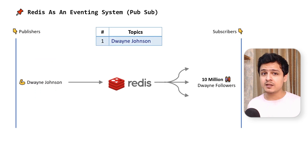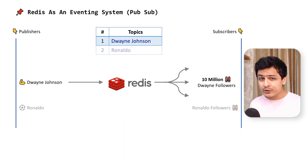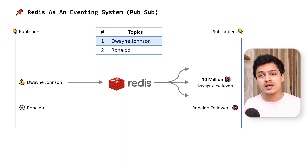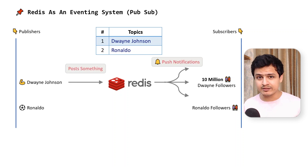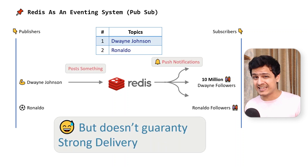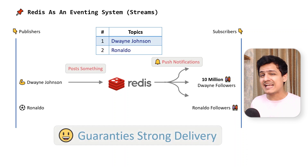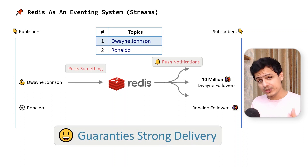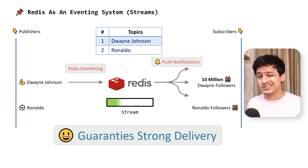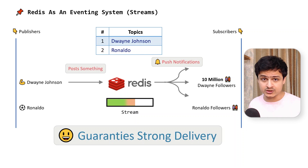Redis supports lightweight PubSub-style messaging with at-most-once delivery. Creating new topics in Redis PubSub is extremely easy and can be done on the fly, making it a perfect candidate for RPC and fire-and-forget use cases. Redis also has Redis Streams for Kafka-like semantics, providing at-least-once delivery, which you can use when you want stronger guarantees. And since all of this resides completely in memory, you can do interesting things like playing the stream in reverse order.